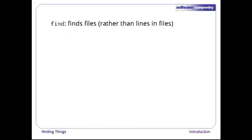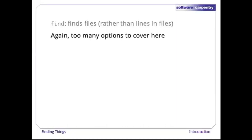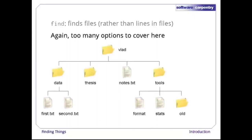While grep finds lines in files, the find command finds files themselves. Again, it has a lot of options — too many to cover here. To show how its basic features work, we'll use this directory tree. Under Vlad's home directory is one file, notes.txt, and three subdirectories: Thesis (sadly empty), Data (containing first.txt and second.txt), and a tools directory that contains the programs format and stats, and an empty subdirectory called old.